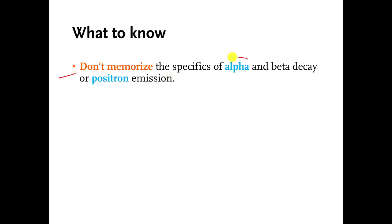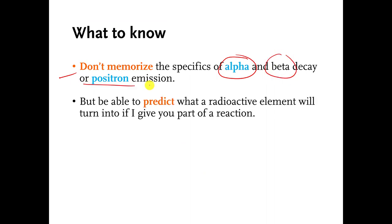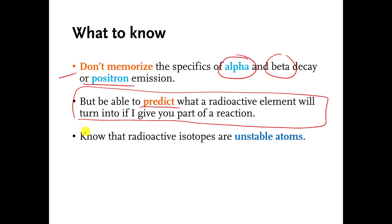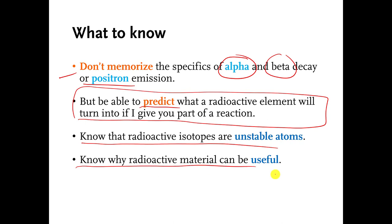So what do I want you to know? Please do memorize what alpha decay is, what beta decay is, positron — those types of things. You should be able to look at a decay equation and figure out the missing piece. You should also know that radioactive isotopes are unstable atoms, you should know why radioactive material can be useful, and you should know why it can be dangerous. And that's the end of this video. See you in the next one.